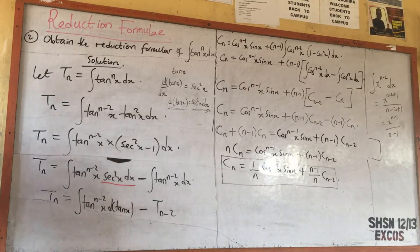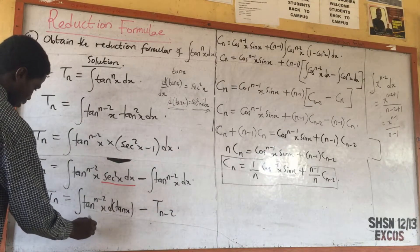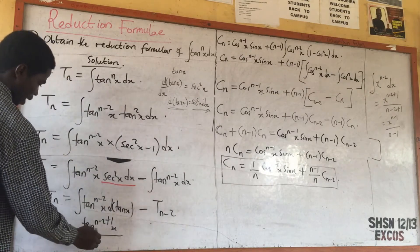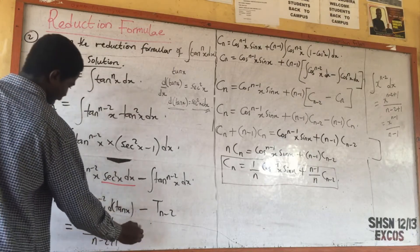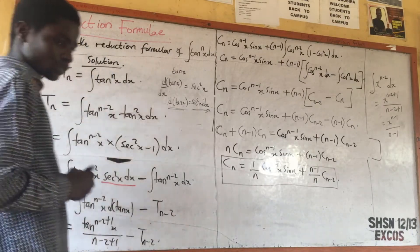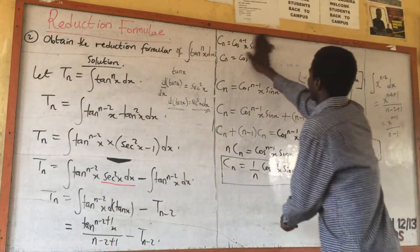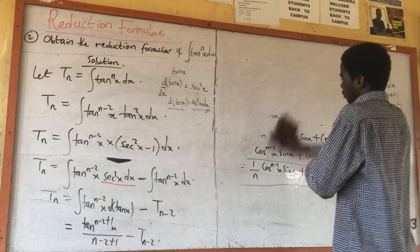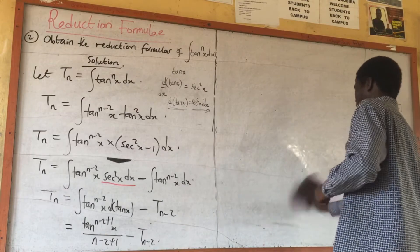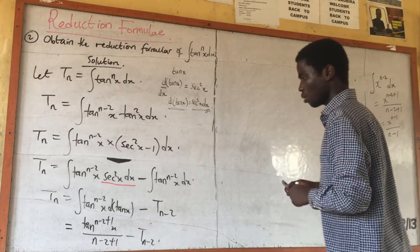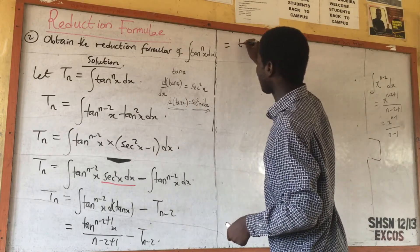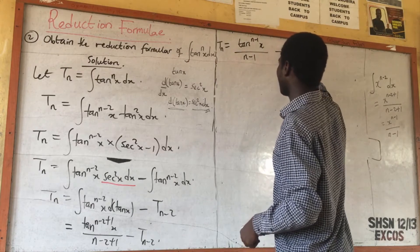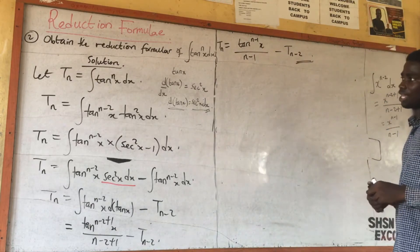So this integral equals tan^(n-2+1)(x) / (n-2+1), which is tan^(n-1)(x) / (n-1), minus T_(n-2). At the end of the day, we obtain the reduction formula: T_n = tan^(n-1)(x) / (n-1) - T_(n-2). That is the reduction formula for tan^n(x).